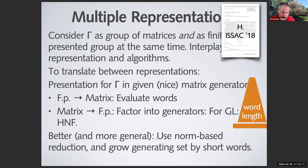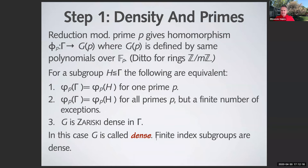The first step is density and finding primes. Given matrices over the integers, we can reduce modulo some number — say a prime p — and get matrices modulo p. Because our matrices have determinant one, the result is invertible modulo p, giving a homomorphism from our group (say SL_n(Z)) to SL_n(F_p), the group over the field with p elements, or over the residue class ring integers modulo m.